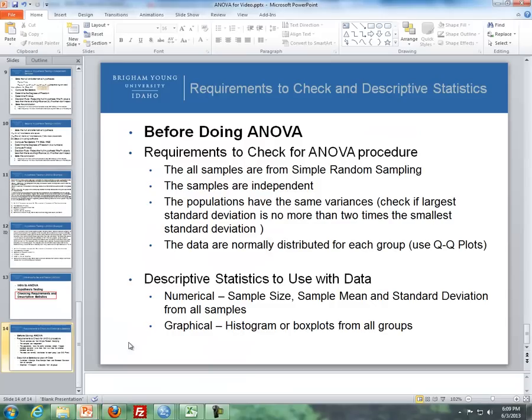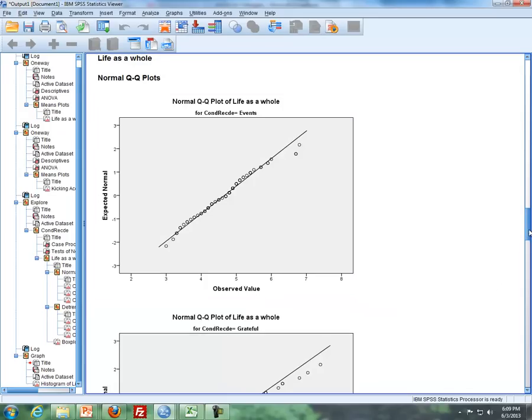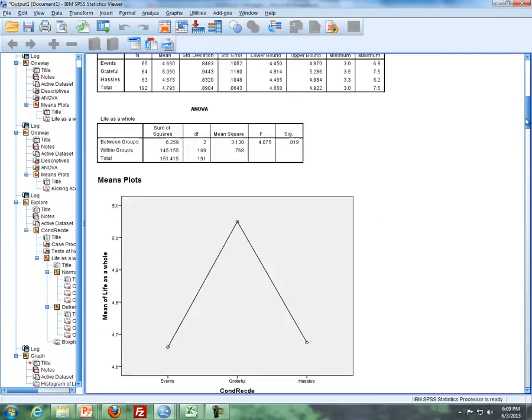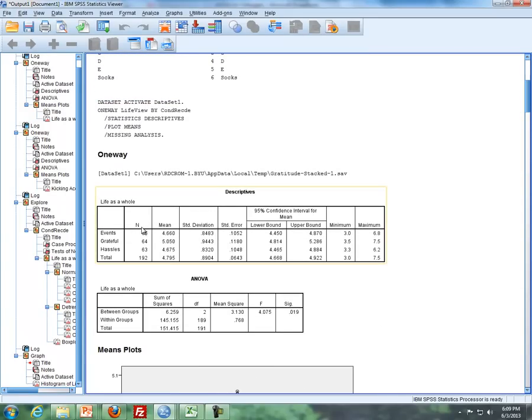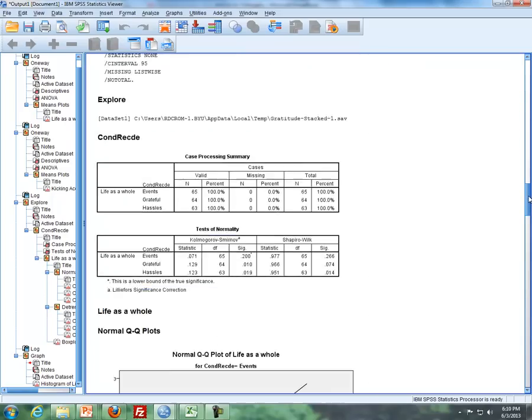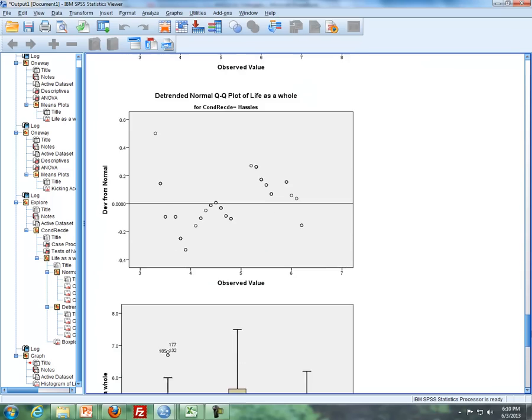Okay. Now, lastly, what I want to mention here is the descriptive statistics used with the data. Typically, we mention the sample sizes, the sample means, and the standard deviations for all the samples. And then for the graphs, you can either do a histogram or box plot for all the groups. So with the numericals, here is going back to what I had showed you earlier. Here's the, for the three different groups, the sample sizes, the means, and the standard deviations. So having this summary and looking at the means and the standard deviations is a pretty good idea and summarizes the data pretty well.